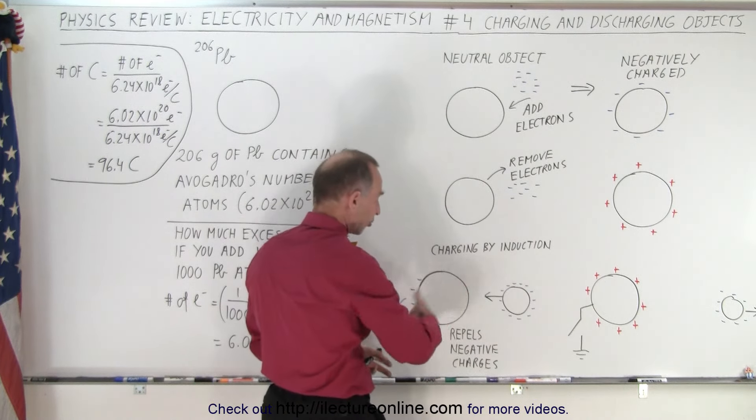If we now add one electron for each 1,000 atoms, how much extra charge is that on this lead ball? A lead ball of 206 grams is not a very big ball — maybe the size of a golf ball or something like that, maybe even less. So we're going to add one electron for every 1,000 atoms, so we multiply one over 1,000 times Avogadro's number, and that means we're going to add this number of electrons to that small little lead ball.